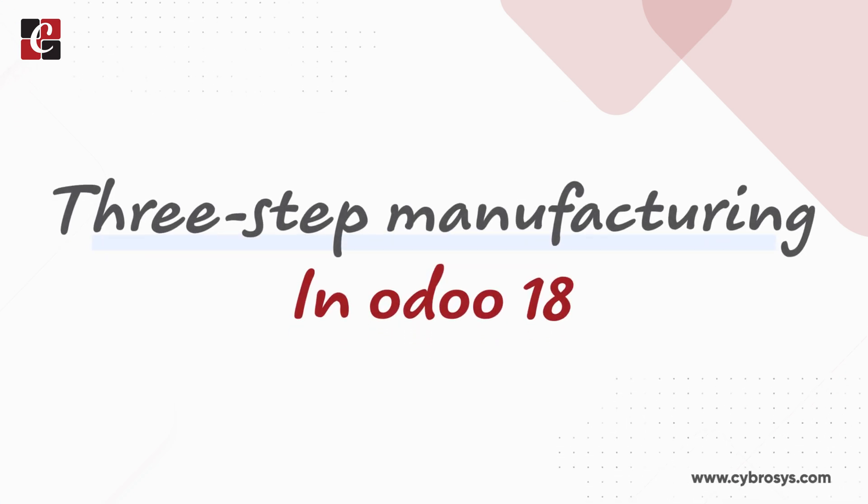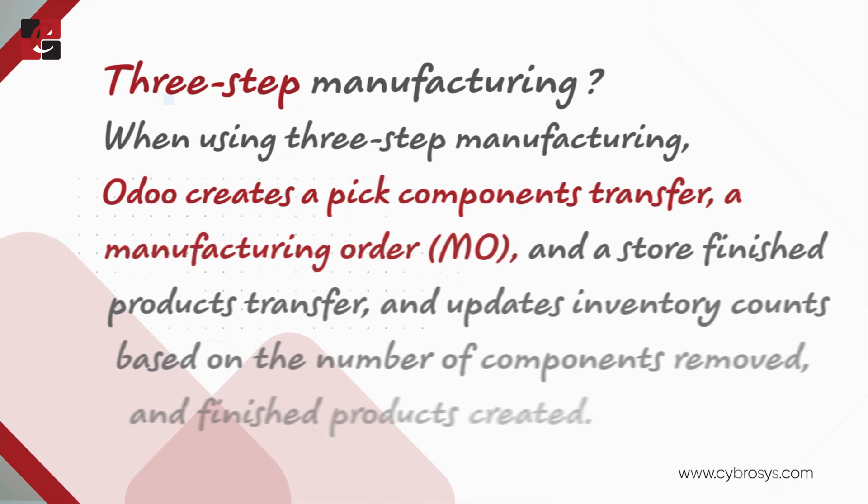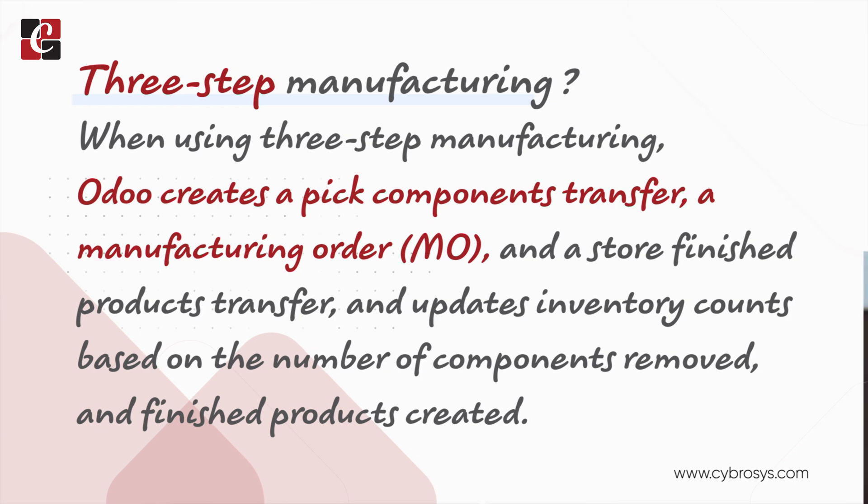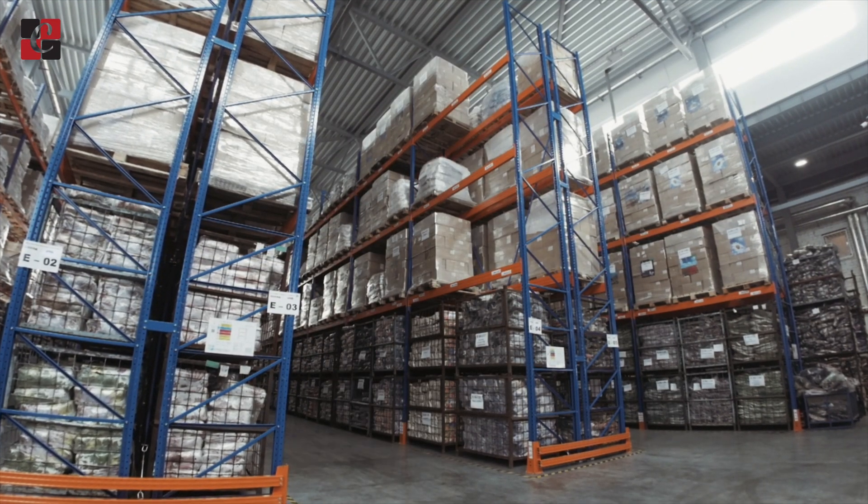Welcome back to new content of Cybros. In today's video we will discuss the three-step manufacturing process in Odoo. The three steps are: first, pick the item from the warehouse; second, transfer the picked item into the production area for the manufacturing process; and third, once manufacturing is done, store the finished product in the warehouse.